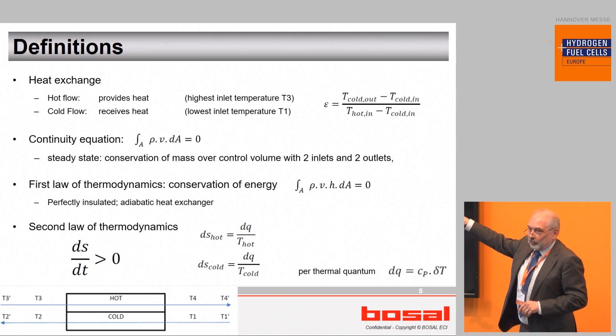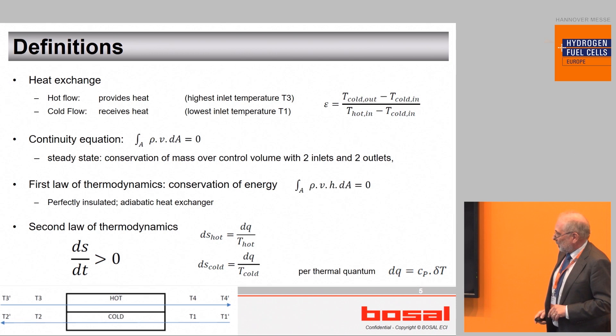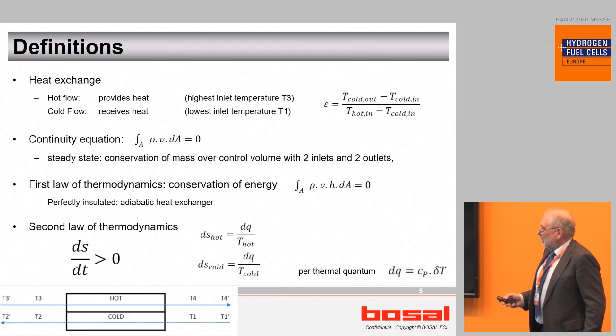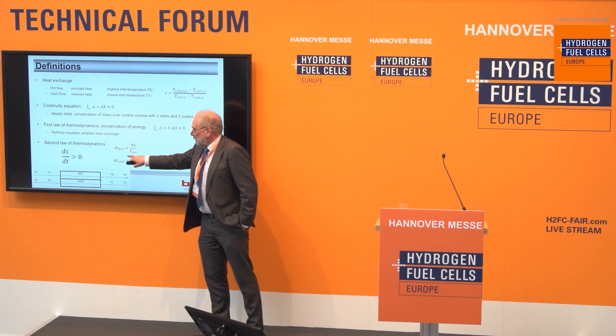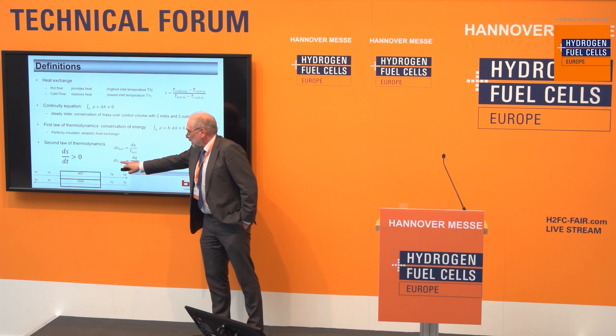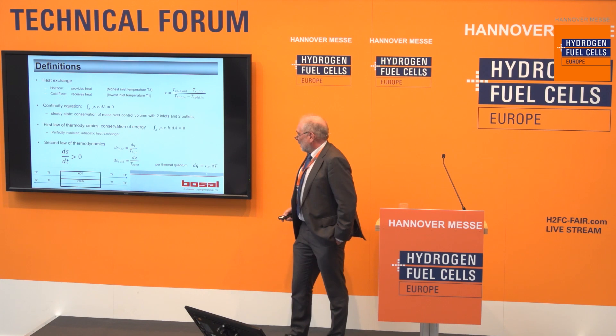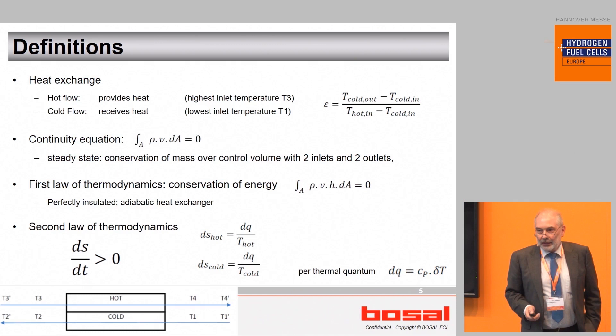And then the thermodynamics. The second law says that entropy has to increase, and that means that if a quantum leaves the hot side it reduces the entropy with this value, and when it enters the cold side it increases with an entropy which is higher because the temperature is lower. Assume also that this DQ stands for a certain delta T.